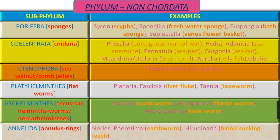The next sub-phylum is Platyhelminthus, which are commonly known as Flatworms. The next sub-phylum is Ascalminthus, where Ascus means Sac and Helminthus means Worms. The common name of this sub-phylum is Nemathelminthus. Examples are Ascaris (Roundworm), Wuchereria which is Filarial Worm, and Ancylostoma, the Hookworm.